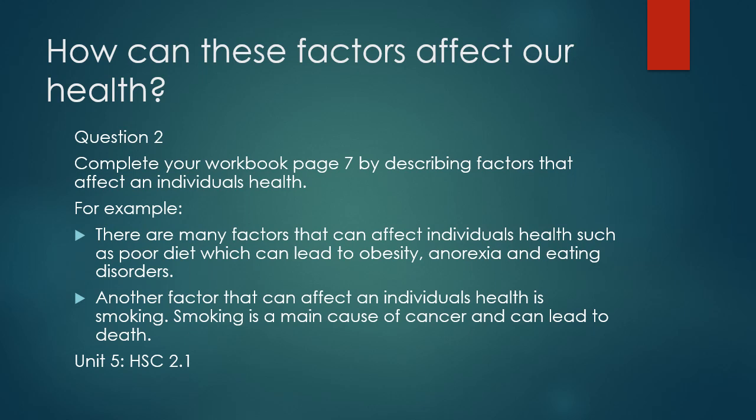Now we come to question number two. The question asks you to describe the factors that affect an individual's health. It's asking you to describe, so give some examples in two to three sentences. You can start with the question itself — for example: 'There are many factors that can affect an individual's health, such as poor diet, which can lead to obesity, anorexia, and eating disorders. Another factor that can affect an individual's health is smoking. Smoking is a main cause of cancer and can lead to death.' Write your answers in your workbook, sign and date the page, and remember to write in sentences with examples of how each factor might affect health.